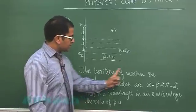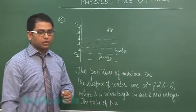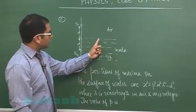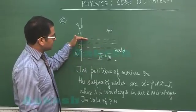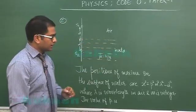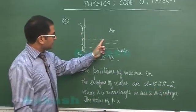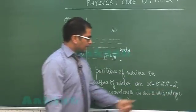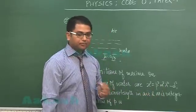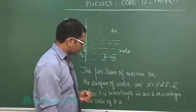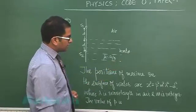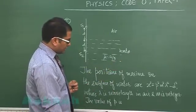The question says the positions of maxima on the surface of water are given by this formula, where x is the distance from this particular point, lambda is the wavelength in air, m is the integer. Out of this particular relation, we need to calculate the value of p.